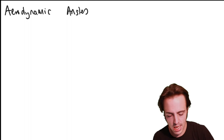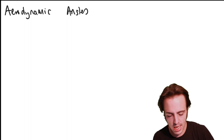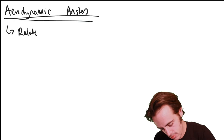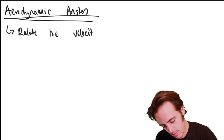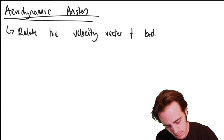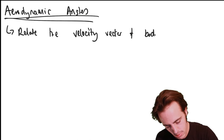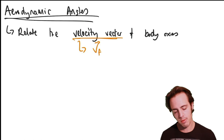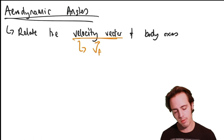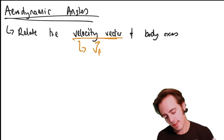The aerodynamic angles are the relationship between the aircraft velocity vector and the body axes. The velocity vector is V_F, and body axes are the axes we've just defined.